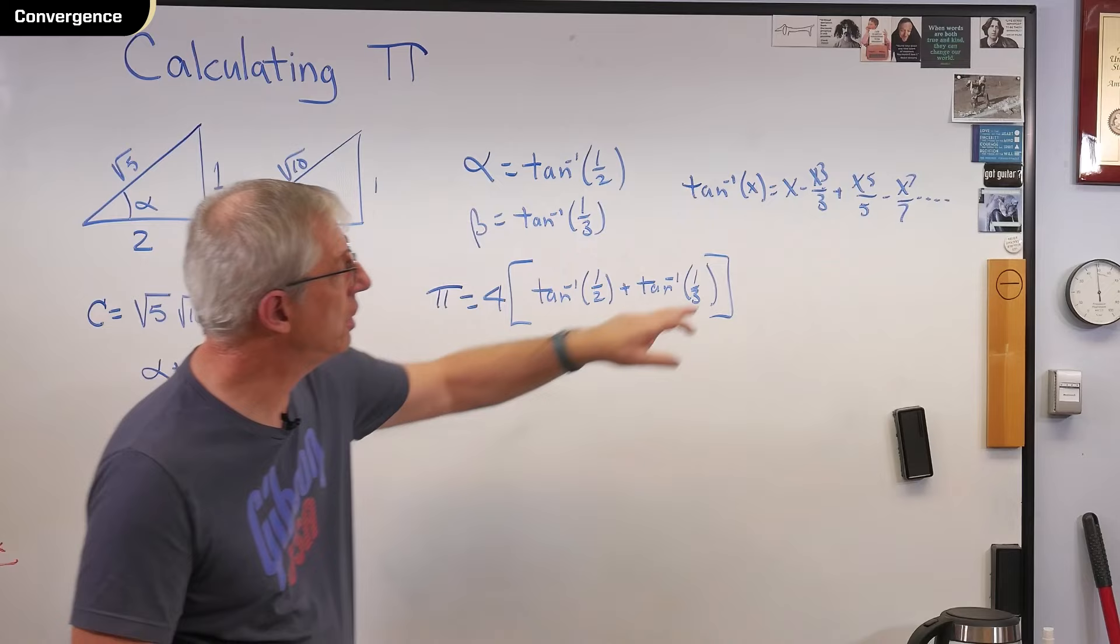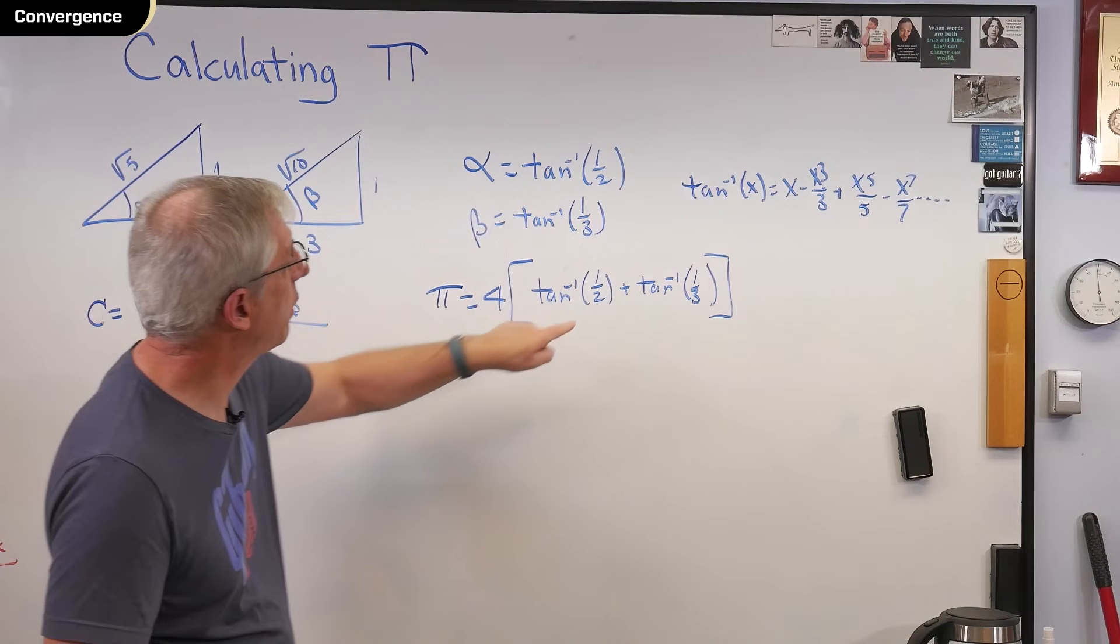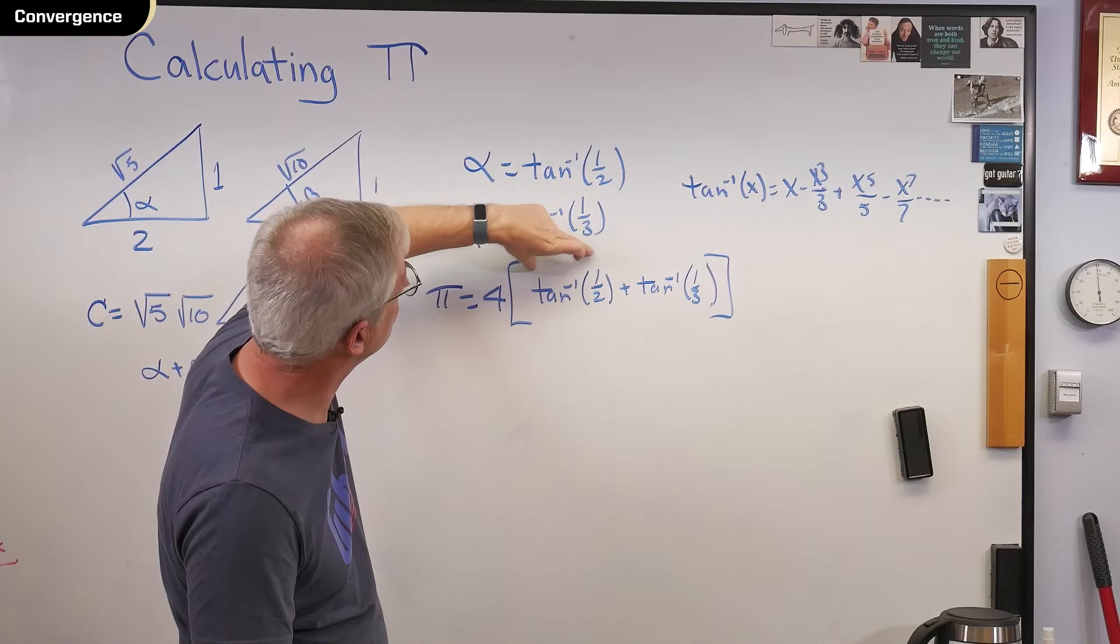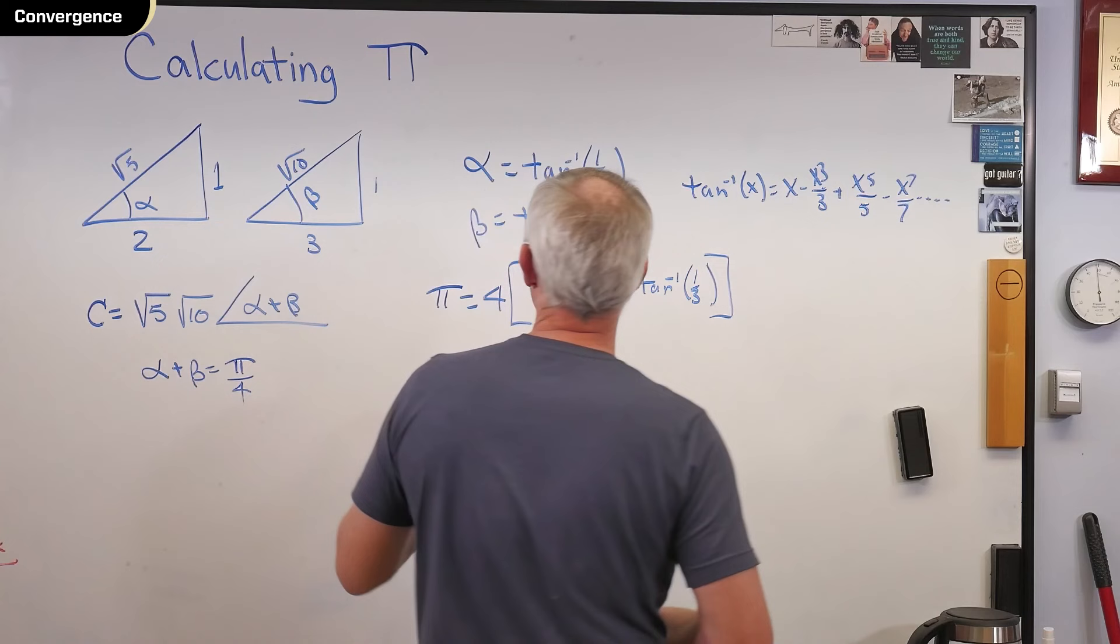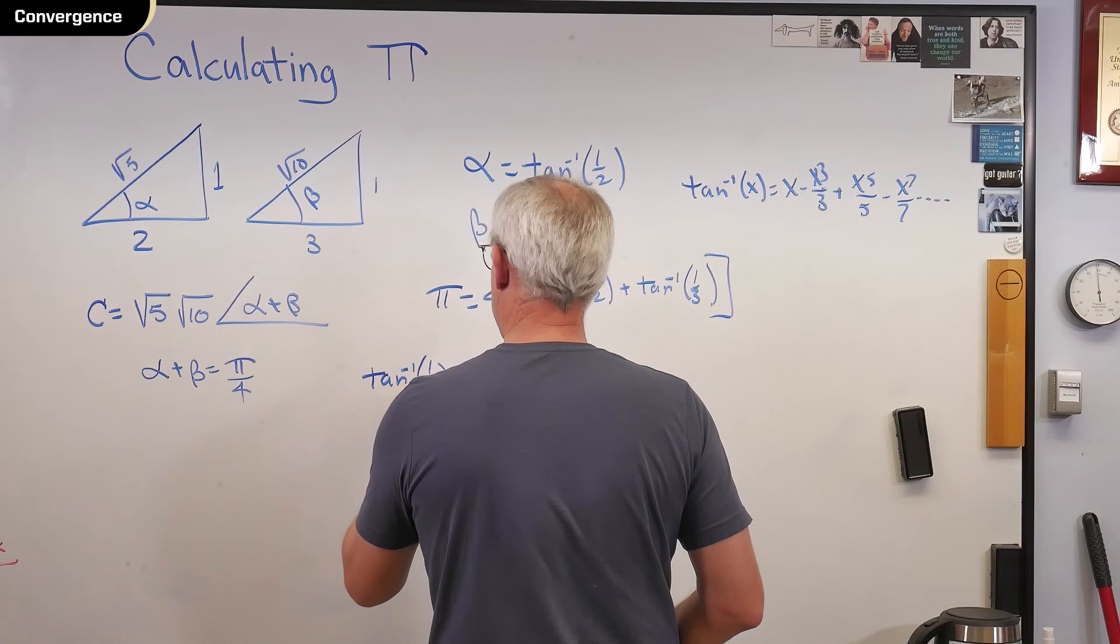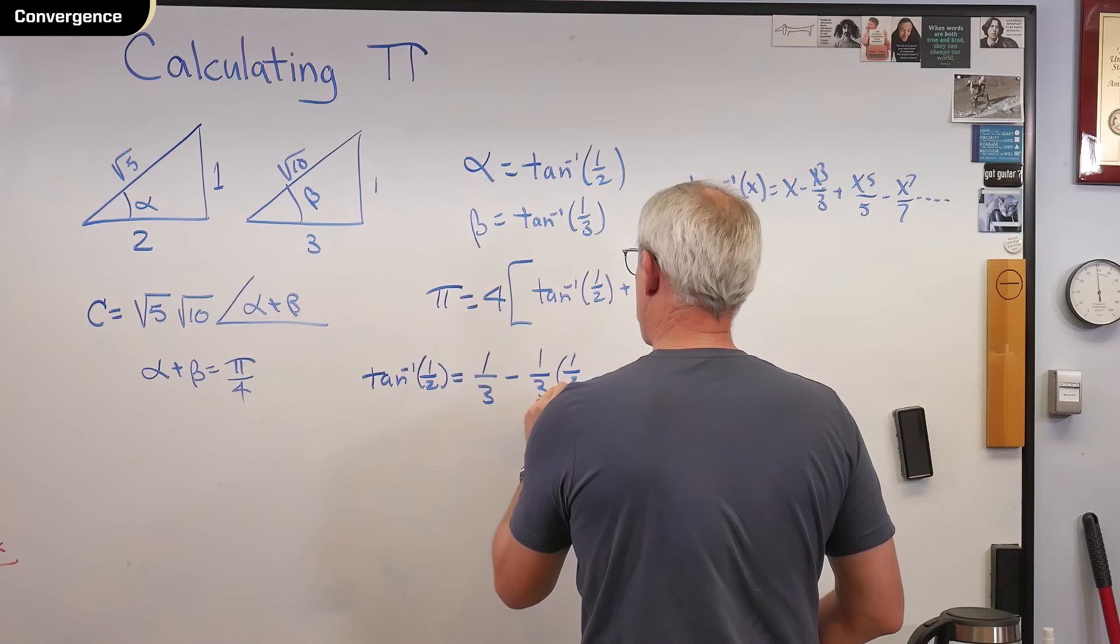Now, convergence is controlled by the largest of these two numbers. Well, the largest is a half. This term here is going to converge much more slowly than the second term. Well, what does this term look like? Inverse tangent of a half is going to be a half minus one-third times one-half to the third power. So it's getting small pretty quickly. One-fifth, one-half to the fifth power minus one over seven, one-half to the seventh.